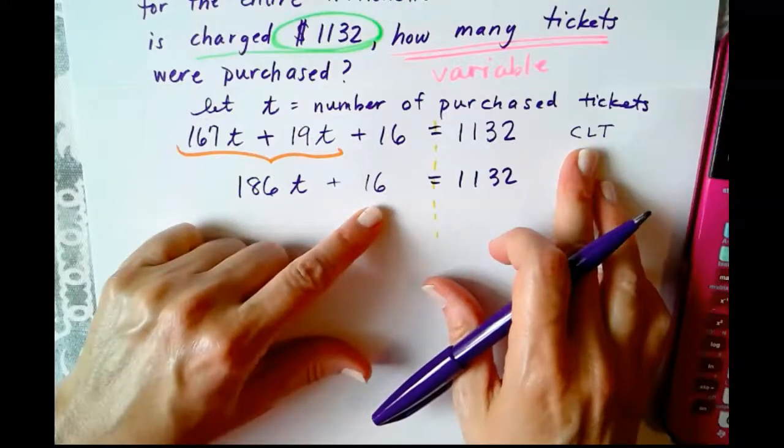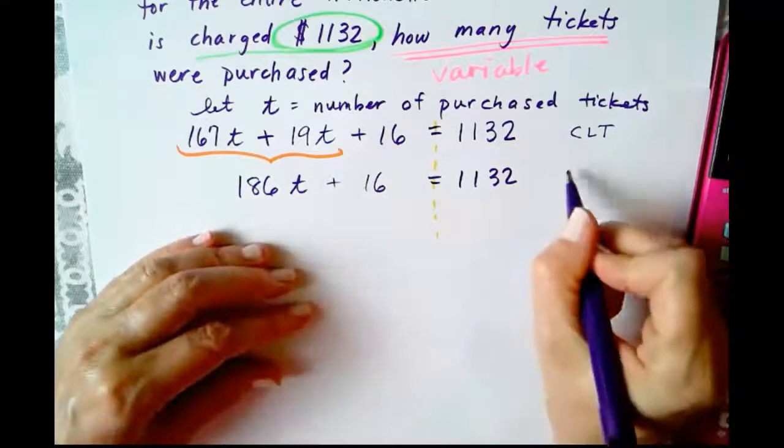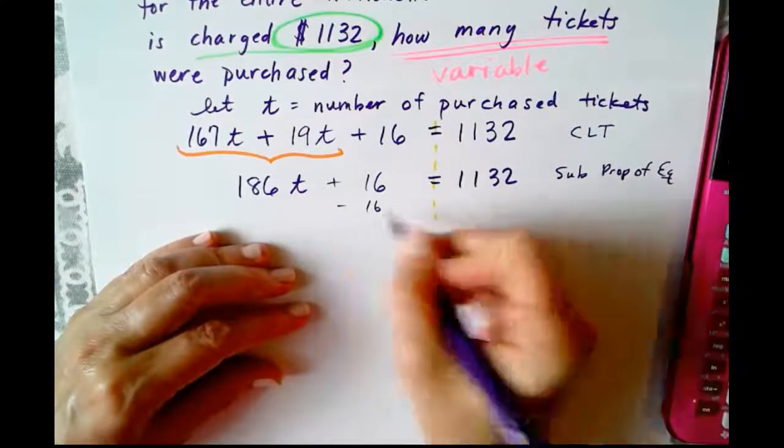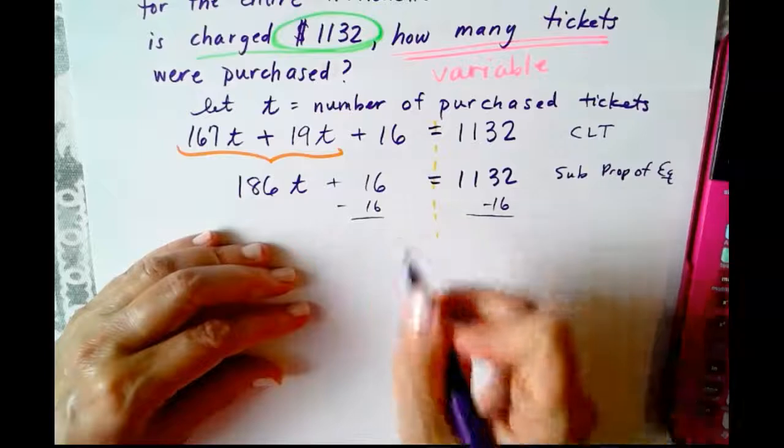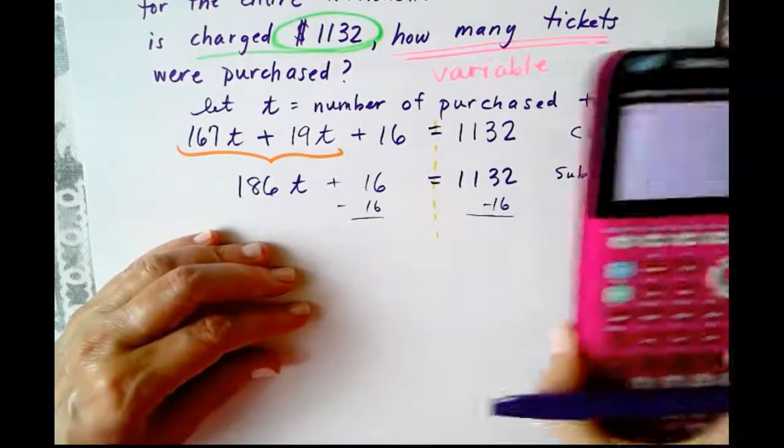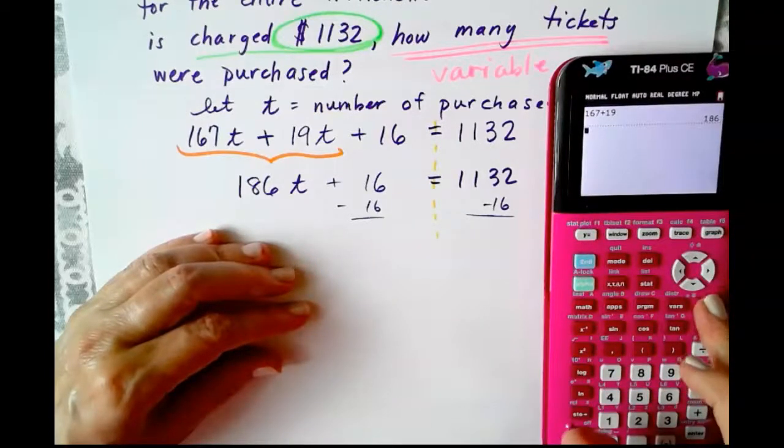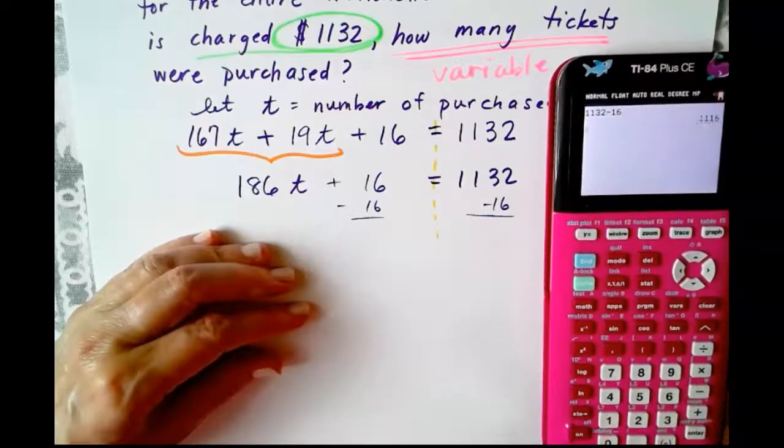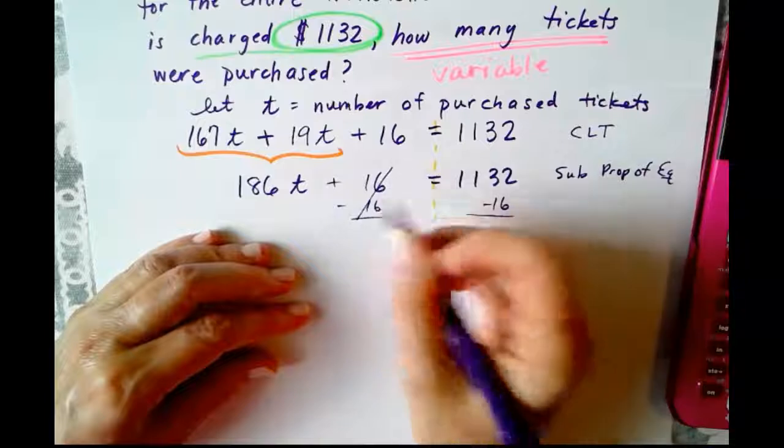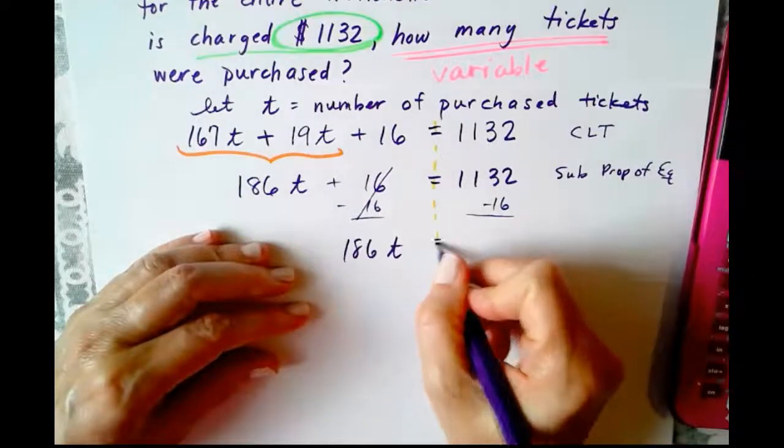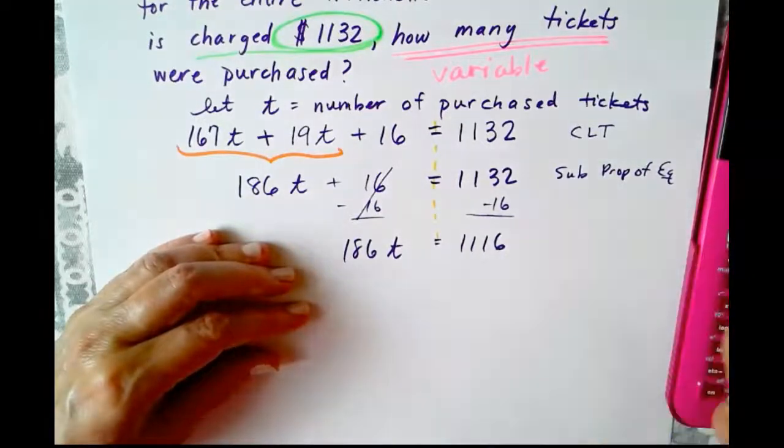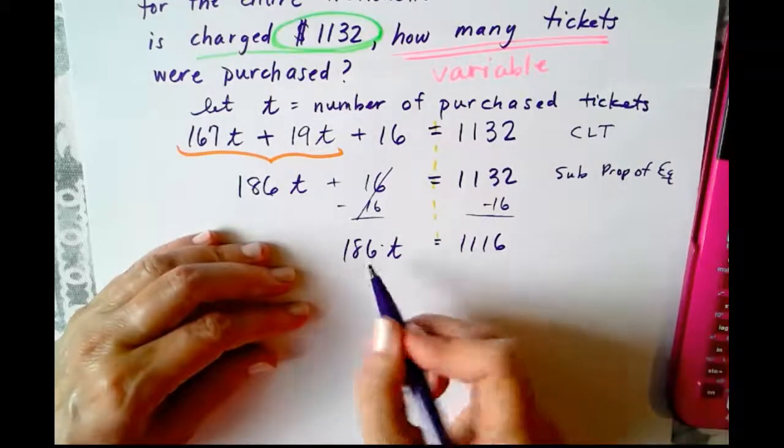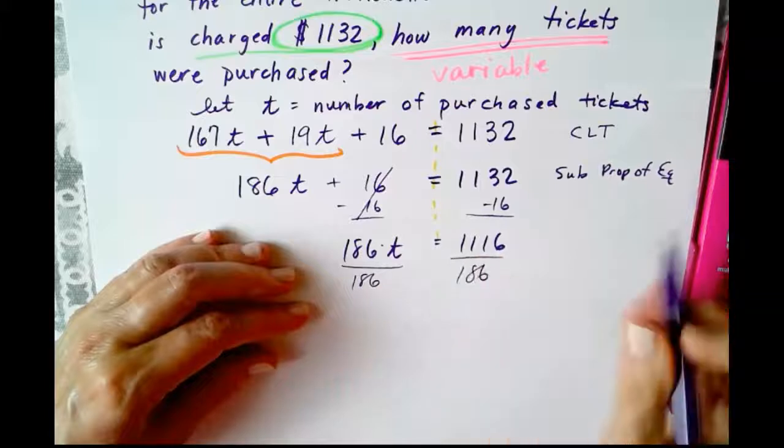I'm just checking to be sure that my answers make sense. That's always a good thing to do. Plus 16 equals 1,132. So what did we do first? We combined like terms. That's our justification for doing this step. The next step, we're undoing the plus 16. So we're going to use the subtraction property of equality, and we're going to subtract 16 from both sides. So 1,132 minus 16 is 1,116. We'll give it a quick check. Yep, here we go. So 186T equals 1,116.